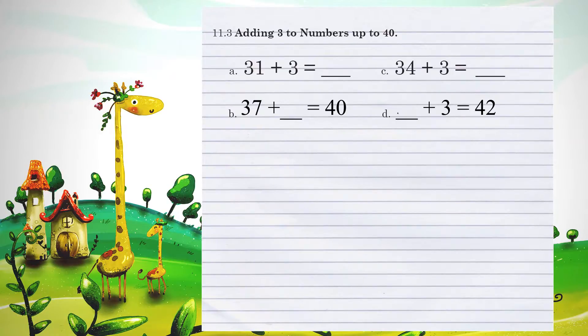Unit 11.3, adding 3 to numbers up to 40. Example A, 31 plus 3. If I take and add together the 2 ones positions, 1 plus 3 is 4, so 31 plus 3 is 34.